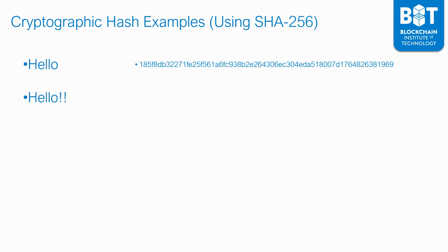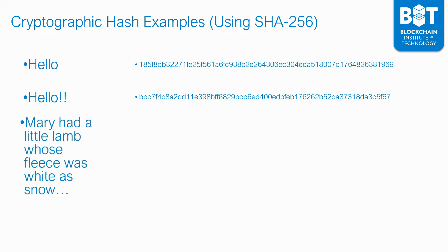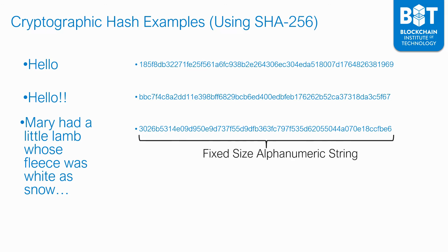If I take 'Hello' and add two exclamation points after it, the cryptographic hash changes completely. Furthermore, I can put in a much longer message — for instance, 'Mary had a little lamb whose fleece was white as snow' — and you also get a cryptographic hash for that. In all cases, it's a fixed-size alphanumeric string. It doesn't matter how long the input string is; you will always get a fixed-size alphanumeric string.